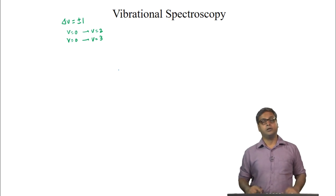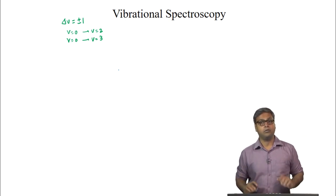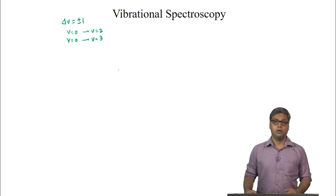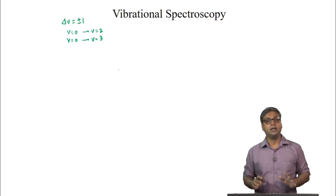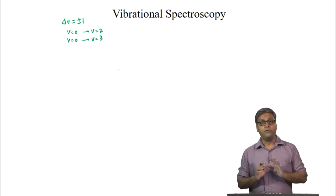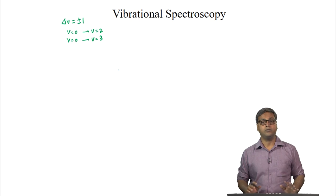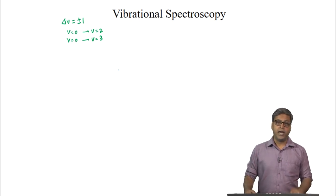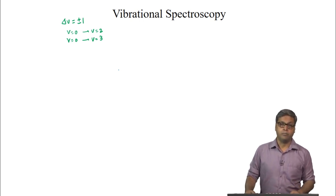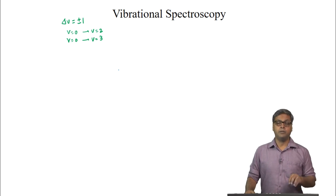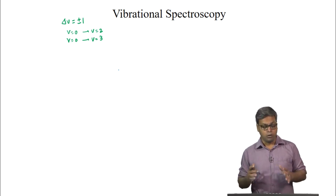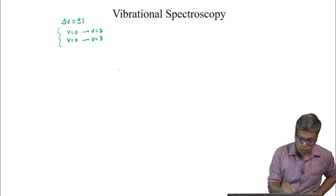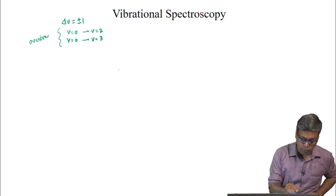In other words, these transitions become allowed. The transitions where delta V is greater than plus or minus 1 are known as overtones, and all these bands are known as overtones.